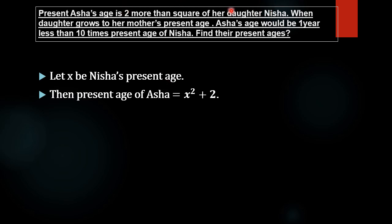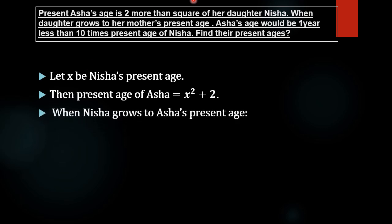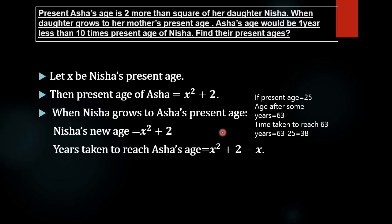We have to find: when the daughter grows to her mother's present age, then Asha's age would be 1 year less than 10 times the present age of Nisha. If Nisha grows to Asha's present age, that is x² + 2, then Asha's age can be found by the expression x² + 2 minus x.